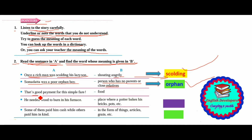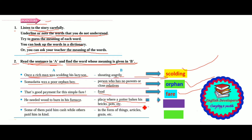'That's good payment for this simple fare' — 'fare' means food. The potter needed wood to burn in his furnace — 'furnace' means the place where the potter bakes his pots. Some of them paid him cash while others paid him in kind — 'in kind' means in the form of things, articles, grains, etc.